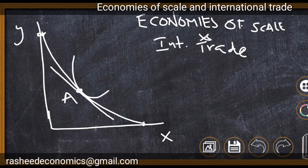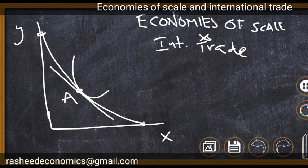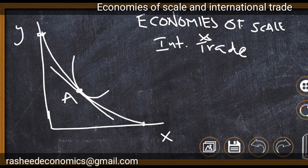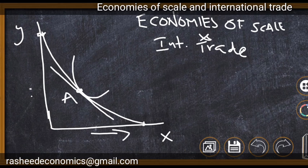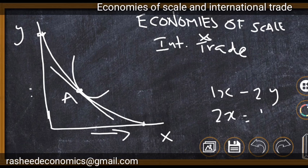If marginal opportunity cost is increasing, the production possibility curve is concave to the point of origin. But here marginal opportunity cost is decreasing, so the additional cost of producing X is on the decrease, and similarly the additional cost of producing Y is also on the decrease. That means additional X can be produced with lesser and lesser amounts of Y. For example, for the first unit of X it requires 2 units of Y; for the second unit only 1 unit of Y; for the third unit only 0.5 units of Y.